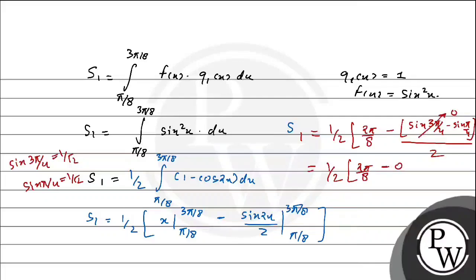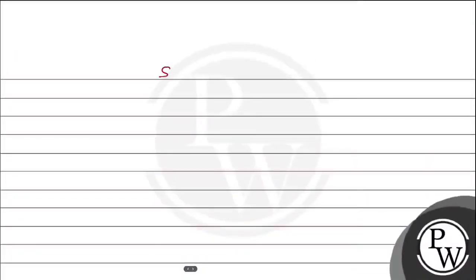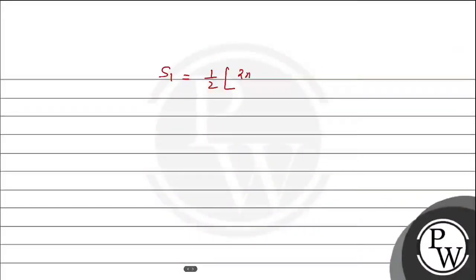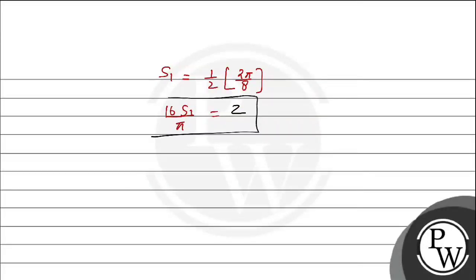तो S1 = (1/2) · (2π/8) = π/8. अब 16S1/π = 16 · (π/8) / π = 16/8 = 2. तो जो हमारा final answer है वो 2 है, क्योंकि हमें 16S1/π की value find करनी थी। Hope you understood it well, best of luck.